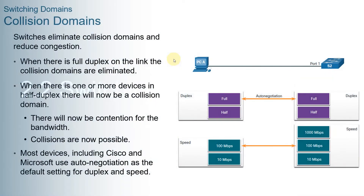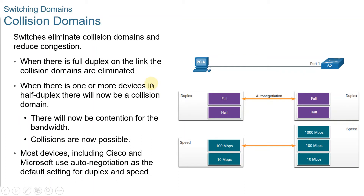Let's talk about switching domains. This topic discusses how switches work with each other and with other devices to eliminate collisions and reduce network congestion. In a legacy hub-based Ethernet segment, network devices competed for a shared medium. Network segments that share the same bandwidth between devices are known as collision domains. When two or more devices within the same collision domain try to communicate at the same time, a collision will occur.